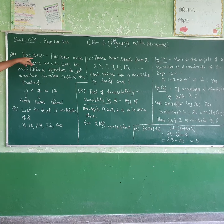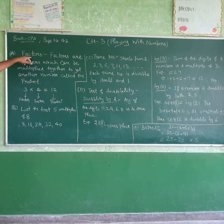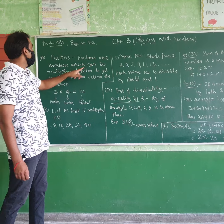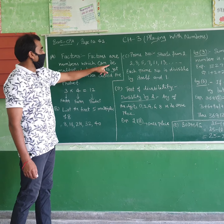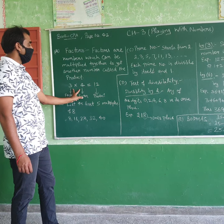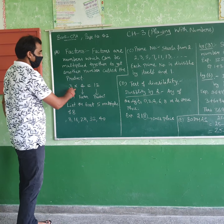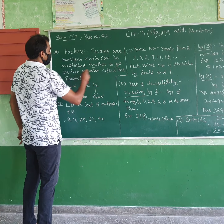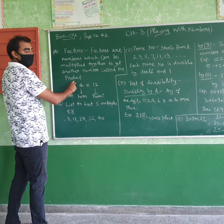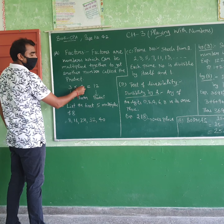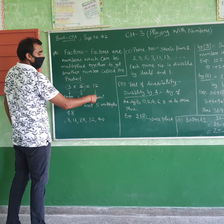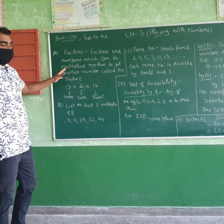First of all, let's start with factors. What are factors? Factors are numbers which can be multiplied together to get another number, called the product. When two numbers are multiplied together, the result is the product — these are the factors.